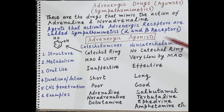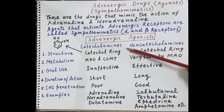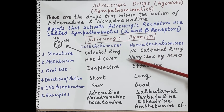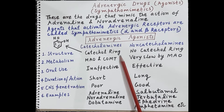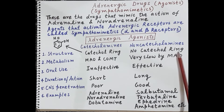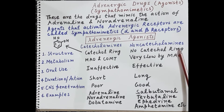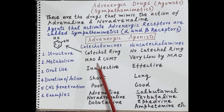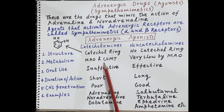We'll be talking about sympathomimetics and adrenergic agonists. Based upon their structure, adrenergic agonists are classified as catecholamines and non-catecholamines. Catecholamines are adrenergic agonists that possess a catechol ring in their structure, whereas in non-catecholamines there is an absence of the catechol ring. Catecholamines are metabolized by monoamine oxidase (MAO) enzyme and/or catechol-O-methyltransferase (COMT) enzyme.